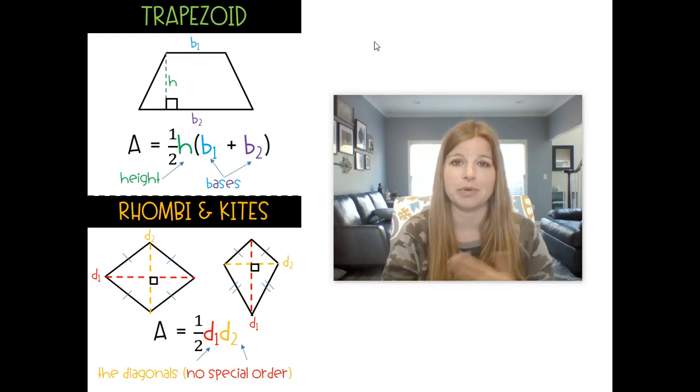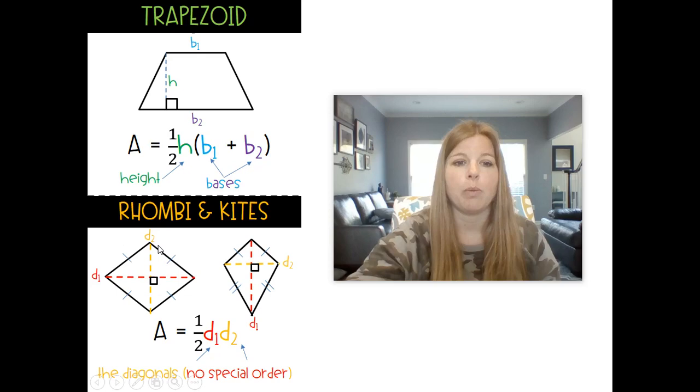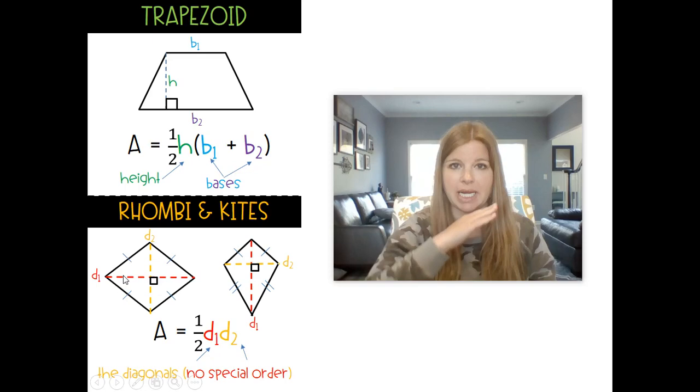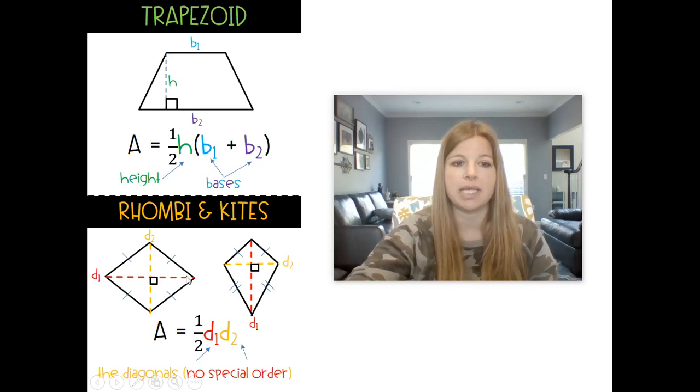Now remember a couple things to remember about a rhombus and a kite. When the diagonals of a rhombus intersect each other in the center of the rhombus, it bisects those diagonals, so each diagonal is cut into two congruent segments. So this segment and this segment are congruent, as well as this segment and this segment are congruent.